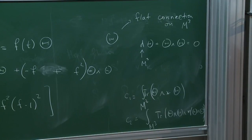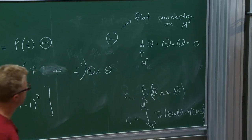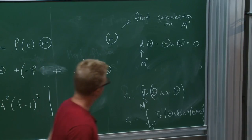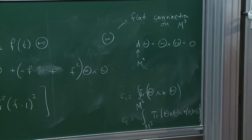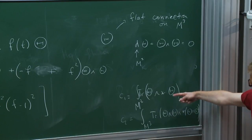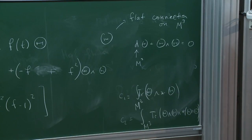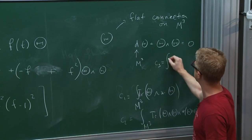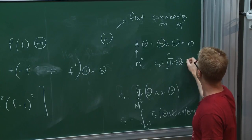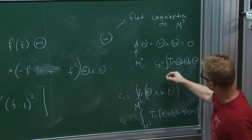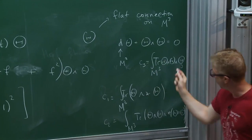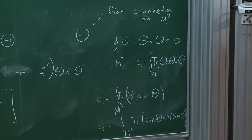In fact, if M3 is the three-sphere, then theta has to be a flat connection, but it may be a flat connection with non-trivial winding number. You can express these quantities using a third constant, which is the Chern-Simons invariant — the integral of theta-cubed — skipping some factors of 2π.